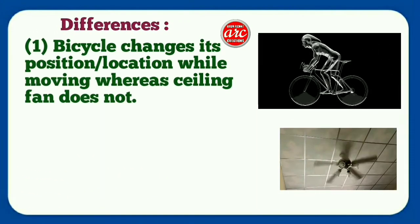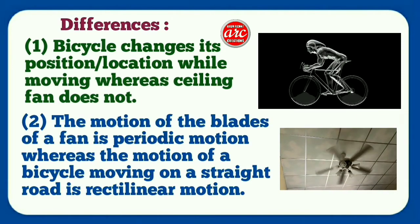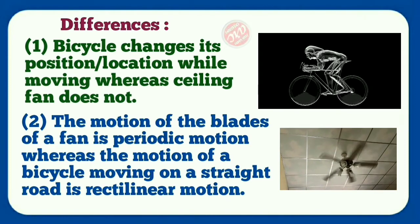Differences: Number one, bicycle changes its position while moving whereas ceiling fan does not. Number two, the motion of the blades of a fan is periodic motion whereas the motion of a bicycle moving on a straight road is rectilinear motion.